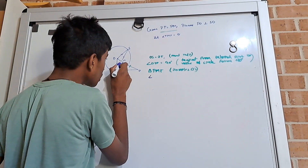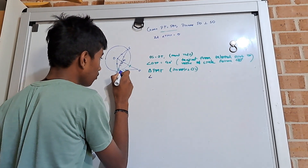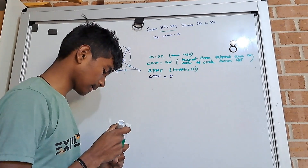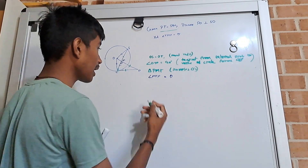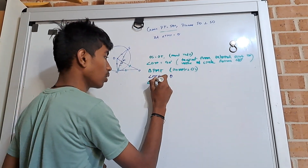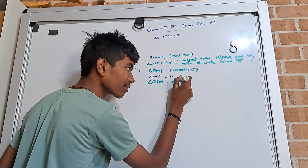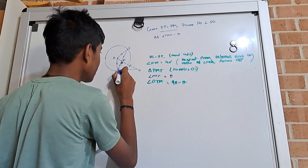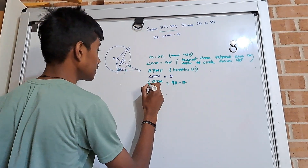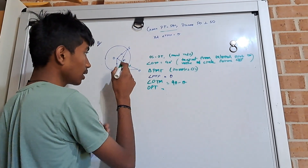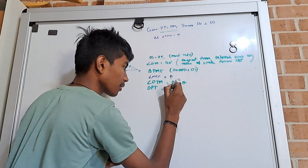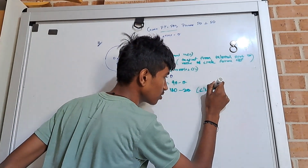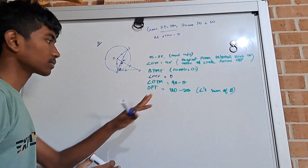So angle MTP is equal to theta. Then angle OTM is equal to 90 minus theta, because if MTP is theta and OTP is 90, then OTM is 90 minus theta. We also know that angle OPT is equal to 180 minus 2 theta, because there are 2 theta at vertex T and we use the angle sum of a triangle — so 180 minus 2 theta.